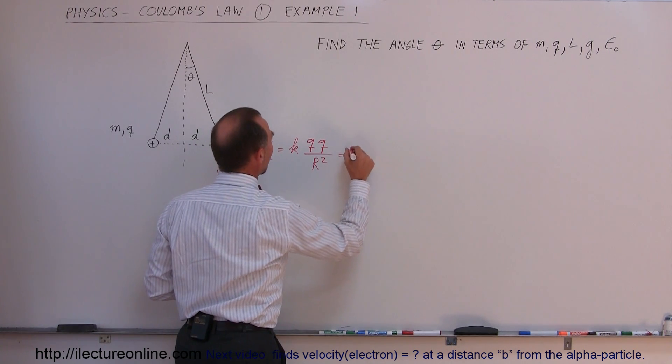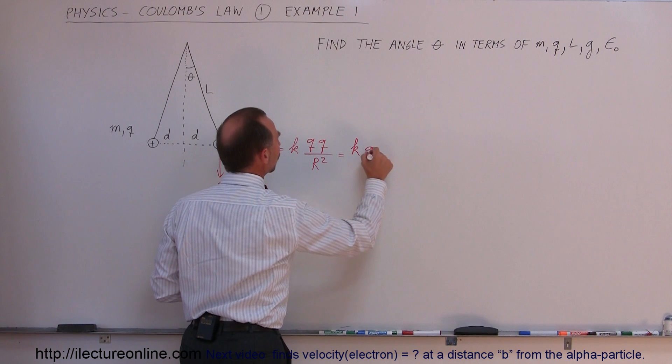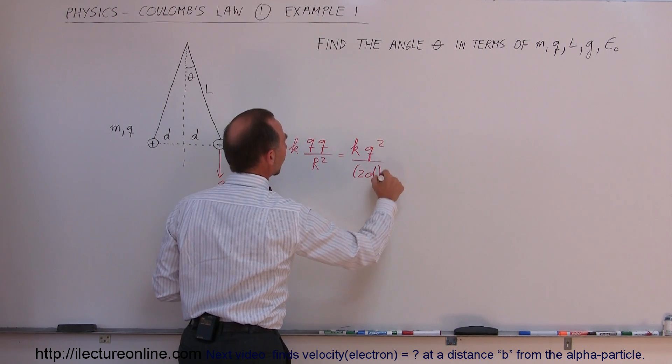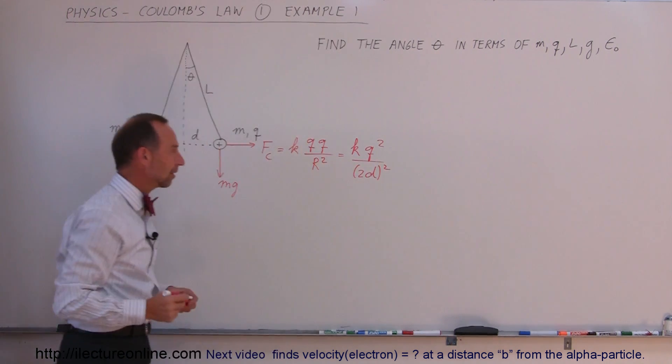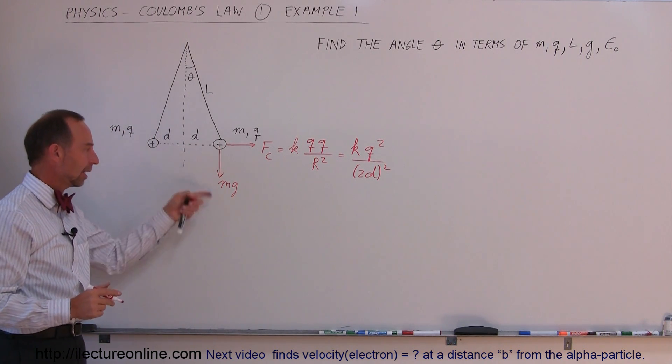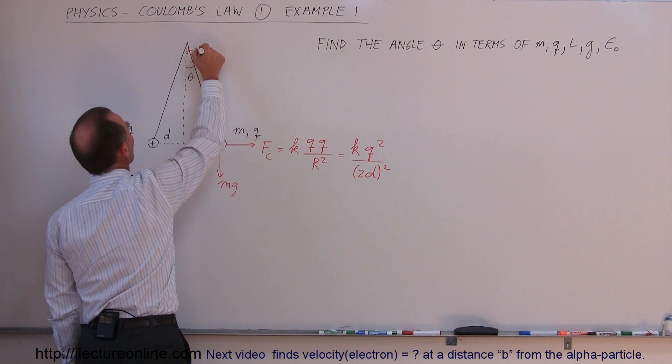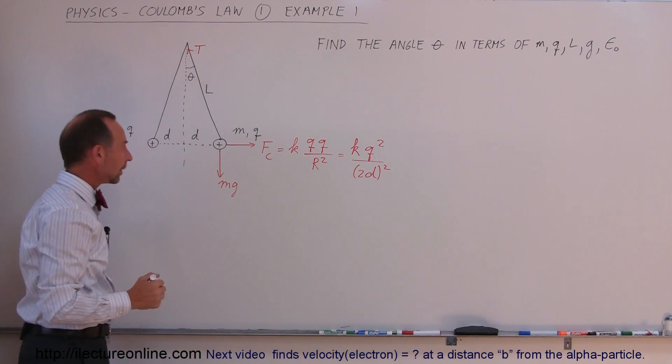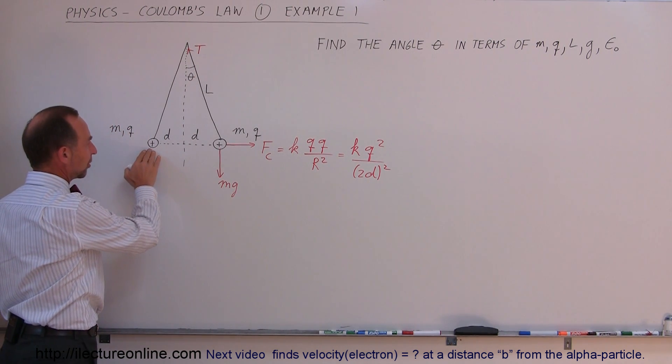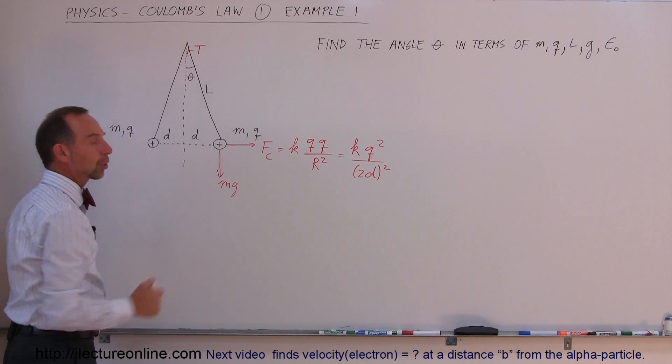That can be written as K times Q squared divided by two times the distance quantity squared. That would be the force to the right and the force of gravity downward. Then we still have the tension pulling in this direction. We have the very same situation on the other mass, but let's just go ahead and work one side only.